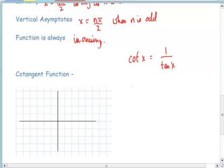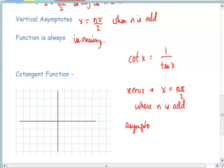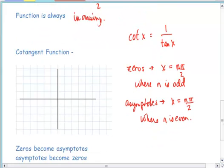For instance, the zeros switch with the asymptotes, so the zeros are now at locations of x equaling n π over 2, where n is odd, and the asymptotes are at locations x equals n π over 2, where n is even. Another property that has switched is cotangent, unlike tangent, cotangent is always decreasing.